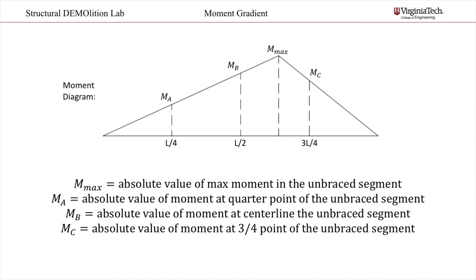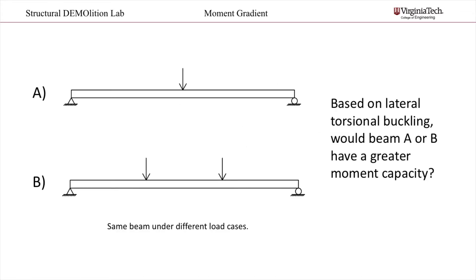An example of where these values come from can be seen with this moment diagram shown for an off-center single point load. Now that we have discussed how to determine the modification factor, do you think load case A or B would give a greater moment capacity?